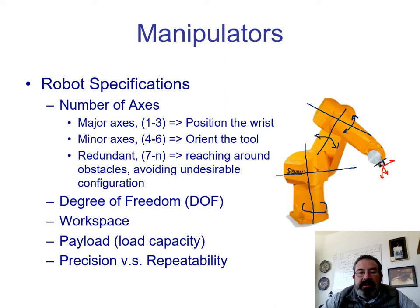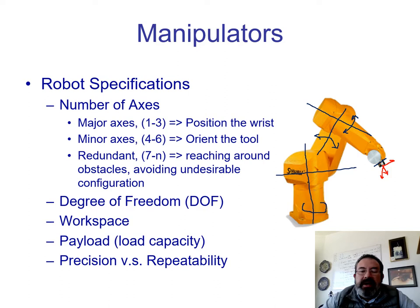For a typical industrial robot, we're going to have six degrees of freedom. But sometimes it's useful to have another link or axis in order to reach around some obstacle or to avoid an undesirable configuration. Those robots are called redundant robots. Degrees of freedom are related to the movements that the robot can do. This is a six-degrees-of-freedom robot — it has six axes, and this is closely related to the quantity of axes that we have.